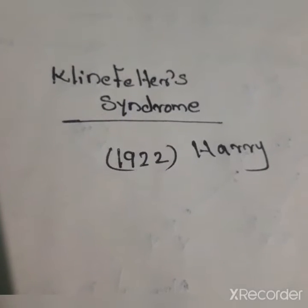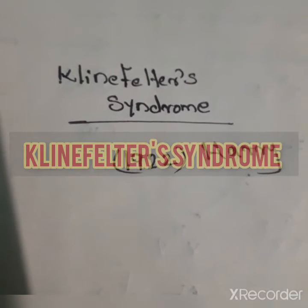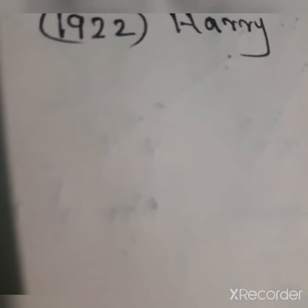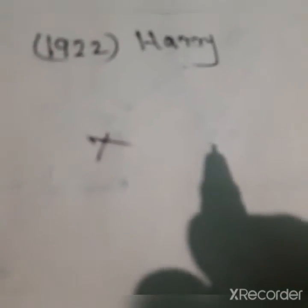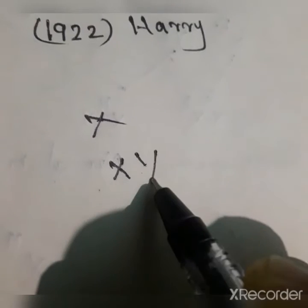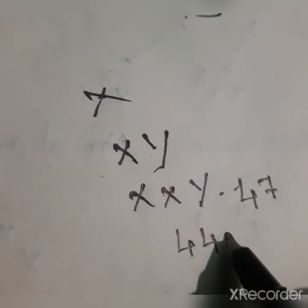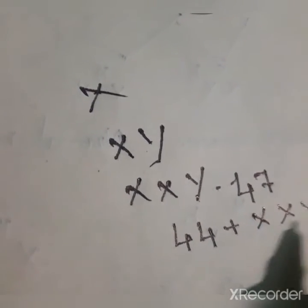The next disorder is Klinefelter syndrome. This disorder was first described by Harry Klinefelter in 1922. It is caused by the presence of an additional copy of the X chromosome, resulting in a karyotype of 47, XXY. In the normal case sex chromosomes are XY in males; in this condition one more X chromosome is added — XXY — so the total number of chromosomes is 47: 44 autosomes plus XXY.